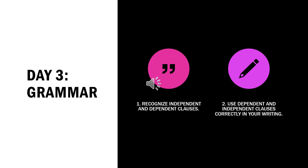On day 3, we are going to start with our grammar lesson. We're going to focus on dependent and independent clauses. You're going to recognize dependent and independent clauses and you will use them correctly in your writing. The word wall for this day is going to be: punctuation, dependent, independent, clause, subordinating conjunction, and coordinating conjunction. You will have a lot of activities on SAVAS that you can explore and practice through.